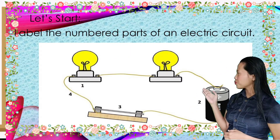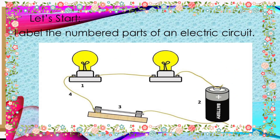Study the picture. Label the numbered parts of an electric circuit. The basic parts — or the four components — of an electric circuit are: Number one, load or device; two, power source or energy source; three, switch or controller; and number four, wire or conductor.